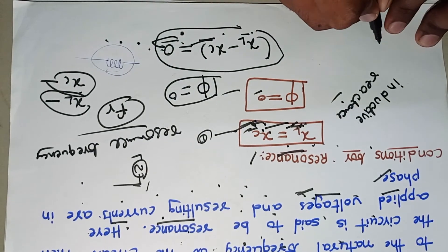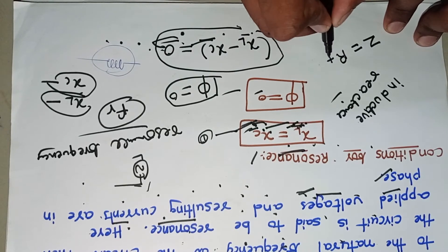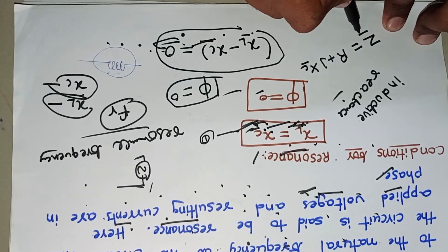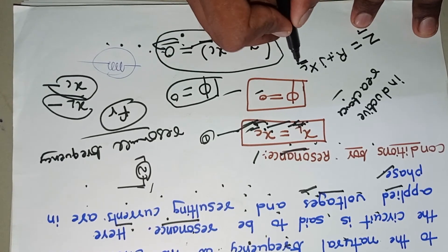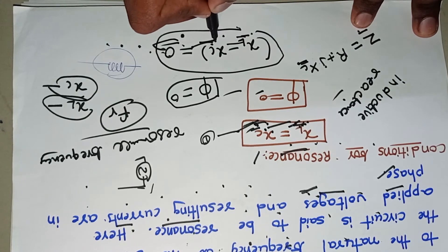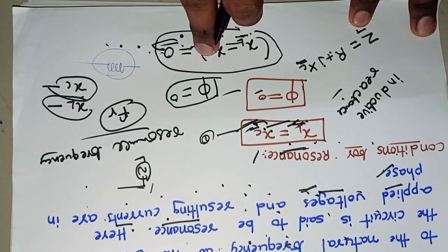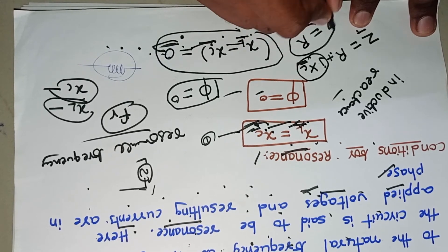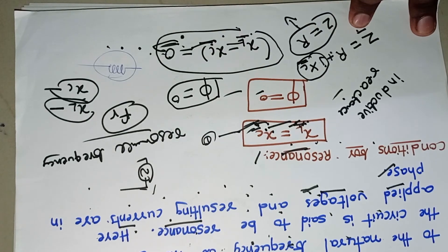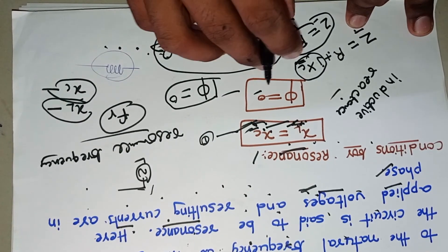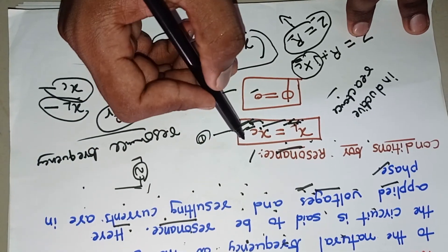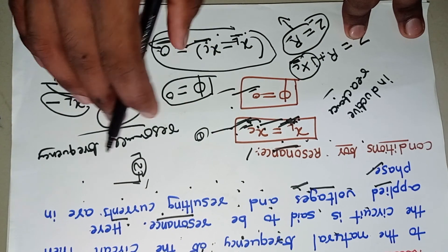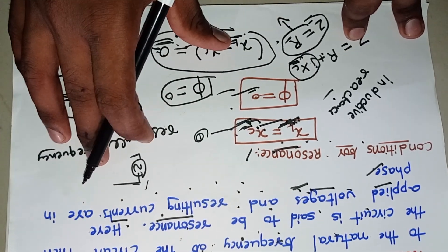One more point: we know impedance Z equals resistance plus reactance. Since in a resonance circuit the reactance is zero — because inductive reactance and capacitive reactance are equal and their difference is zero — this complete reactance term becomes zero. So we get Z equal to R. This is another condition in resonance circuits: impedance equals resistance. So the three conditions are: XL equals XC, phase angle is zero, and impedance equals resistance.